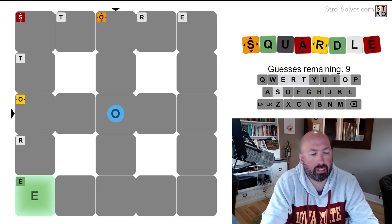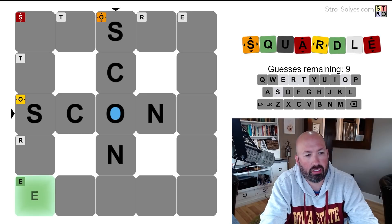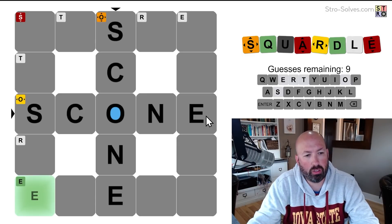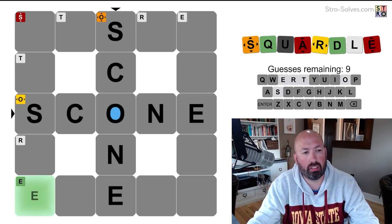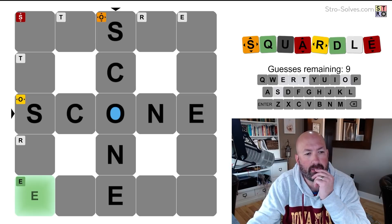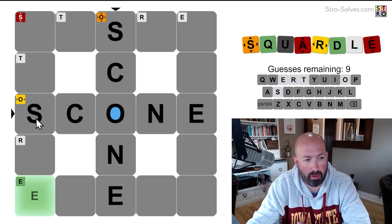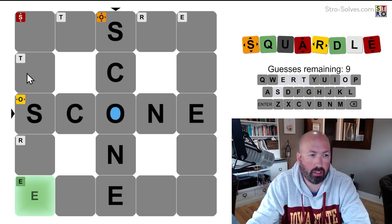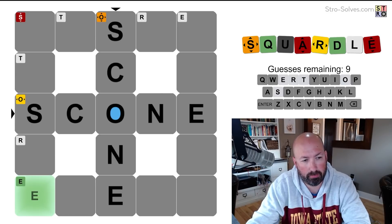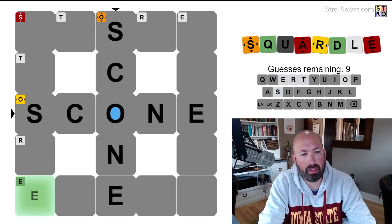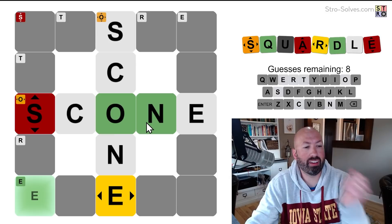All right, maybe something like, I was gonna say something like scone, but we know there's no E in the last column here, but that would let us check if there's an E in the third row or the third column and in this fifth row, because we already know about, well, we know there's an E here. There could be another E in the first column, but otherwise that would tell us where all the E's are. All right, that's probably not the best guess, but I'm gonna go with it anyways. Oh, the O-N, okay.